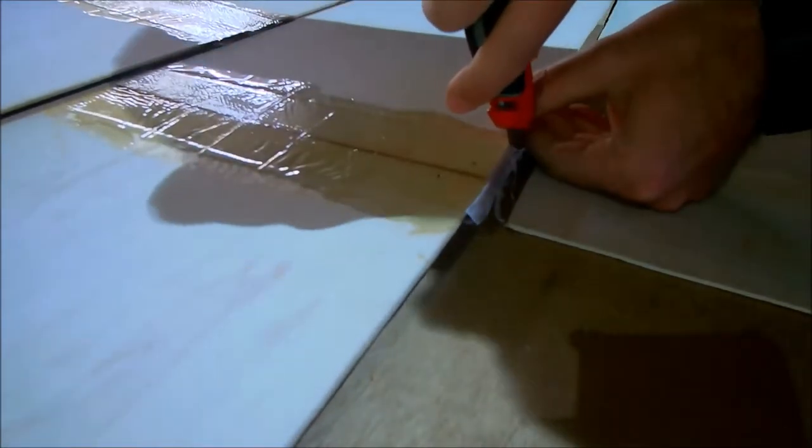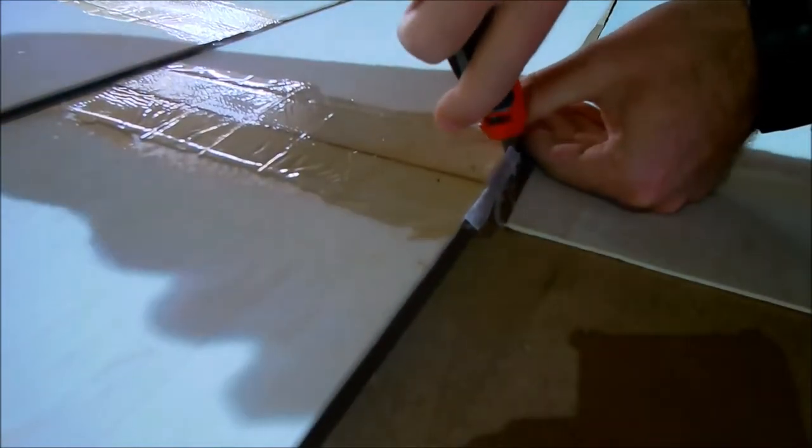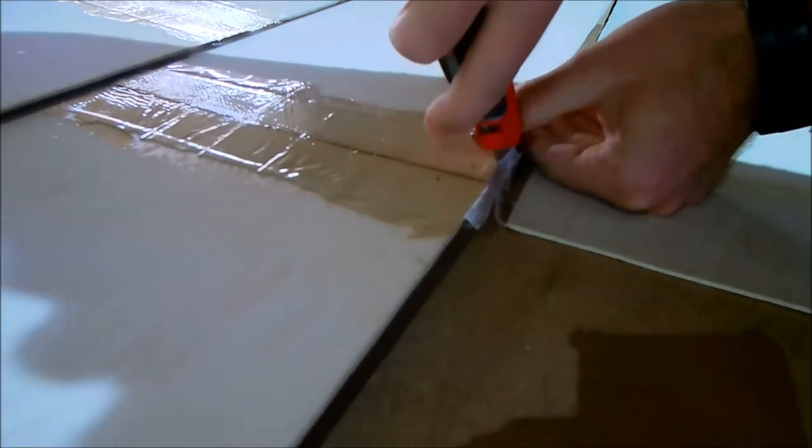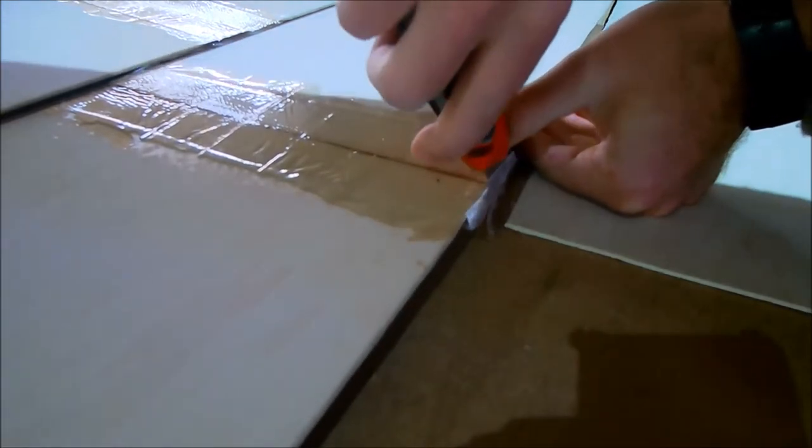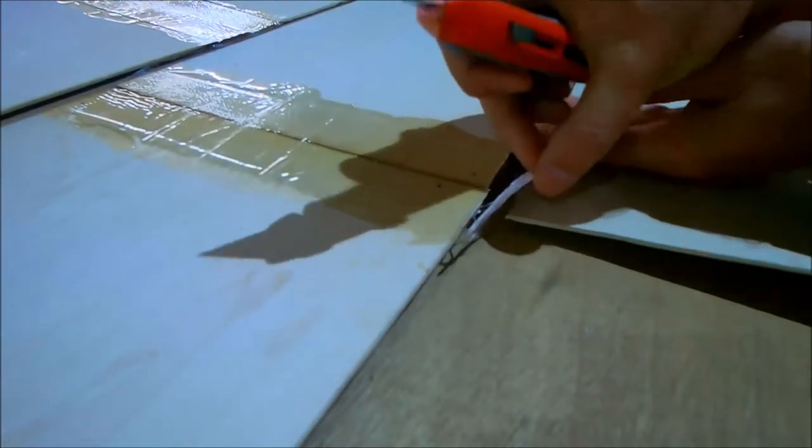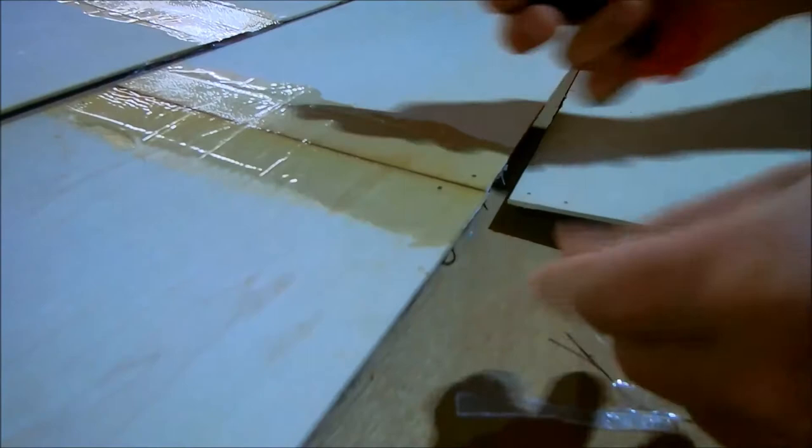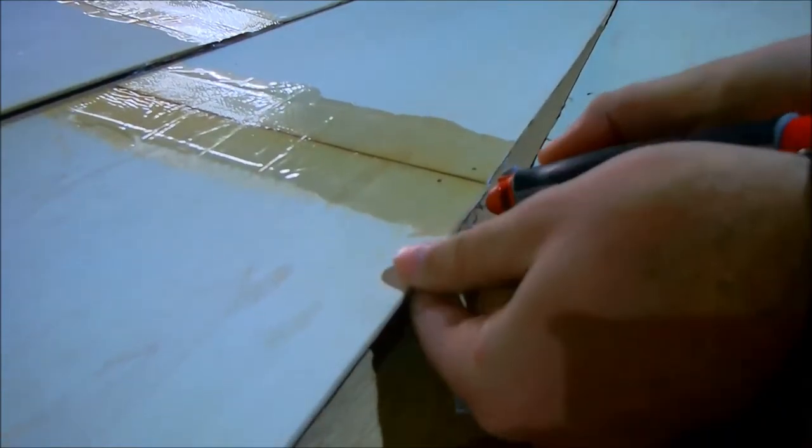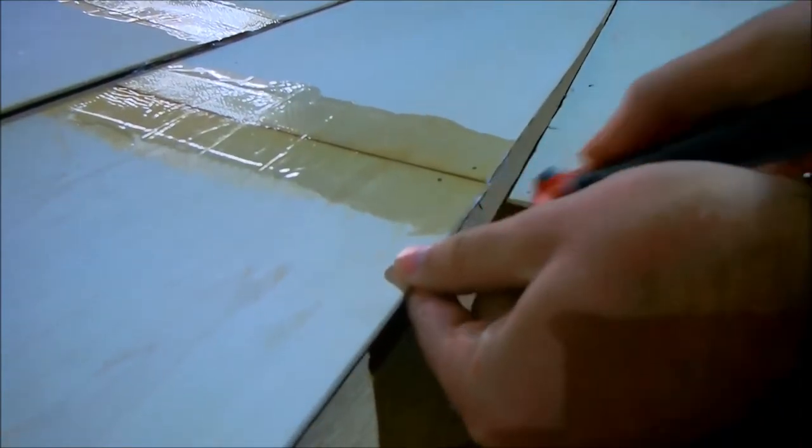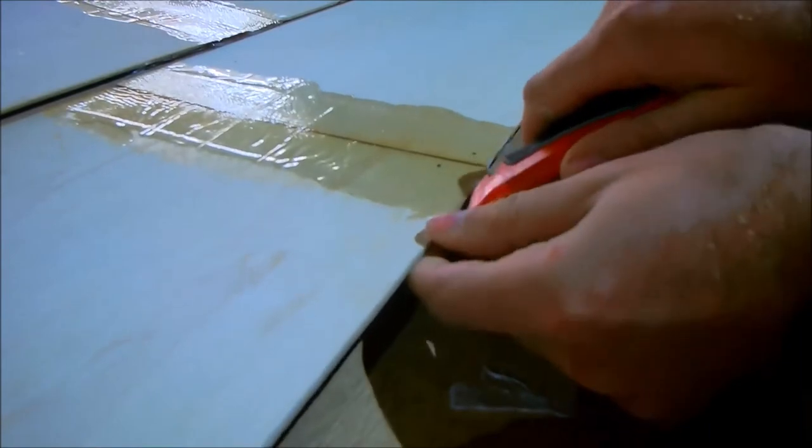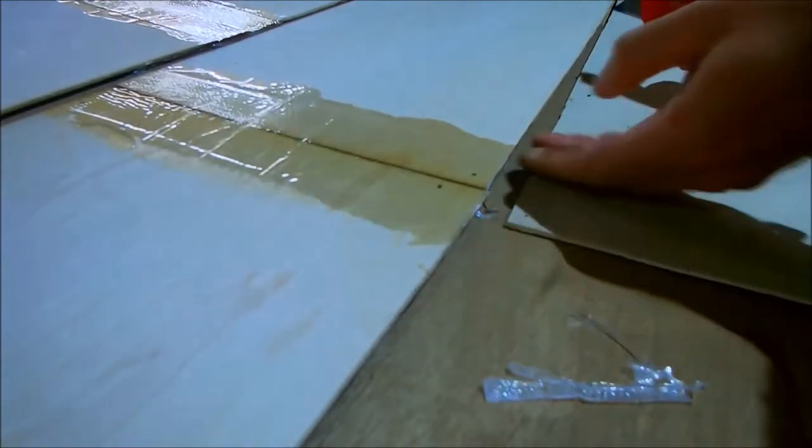Epoxy in this state is called green. It's already hard enough to file and cut. It's a little gummy to sand it properly. I'll prefer leaving it a little bit longer before I sand it. For trimming and cutting, this is the best time.